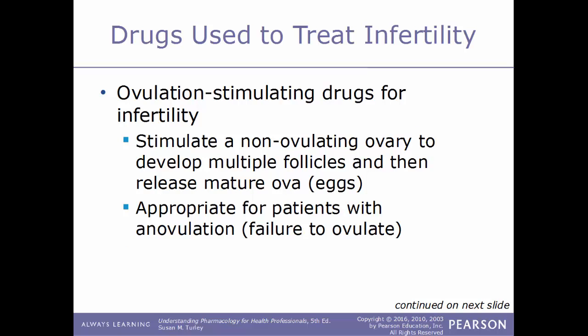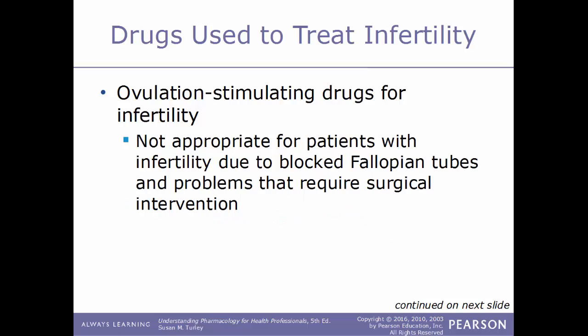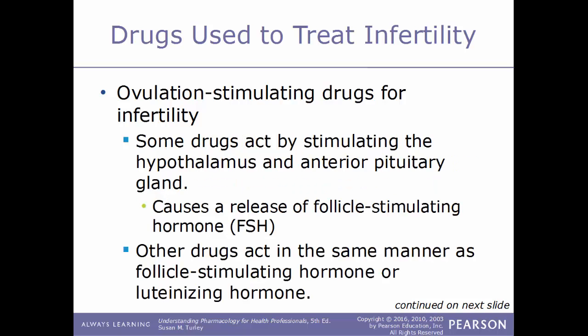Ovulation-stimulating drugs are appropriate for patients with anovulation — a failure to ovulate — but not for patients with infertility due to a blocked fallopian tube or problems requiring surgical intervention. Some of these drugs stimulate the hypothalamus and anterior pituitary gland to cause a release of FSH, follicle-stimulating hormone. Other drugs act in the same manner as FSH or luteinizing hormone.